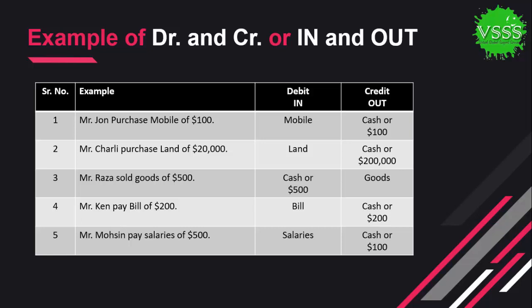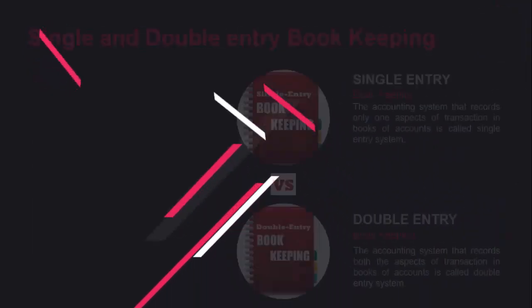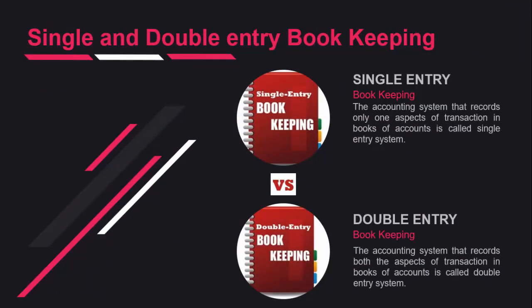The next topic is single entry bookkeeping and double entry bookkeeping. The accounting system that records only one aspect of a transaction in the books of account is called single entry bookkeeping. In single entry bookkeeping, we enter only the debit or the credit — meaning only one aspect of the transaction is recorded.